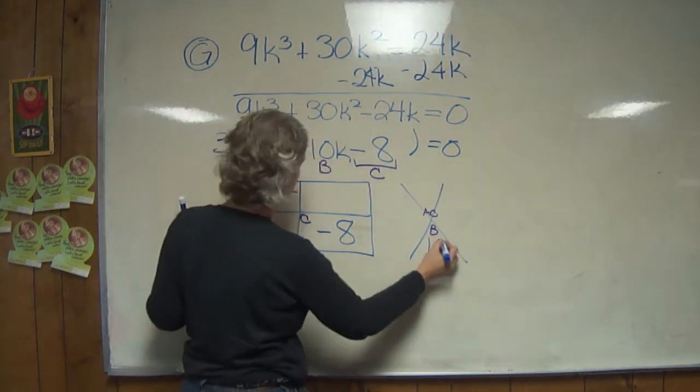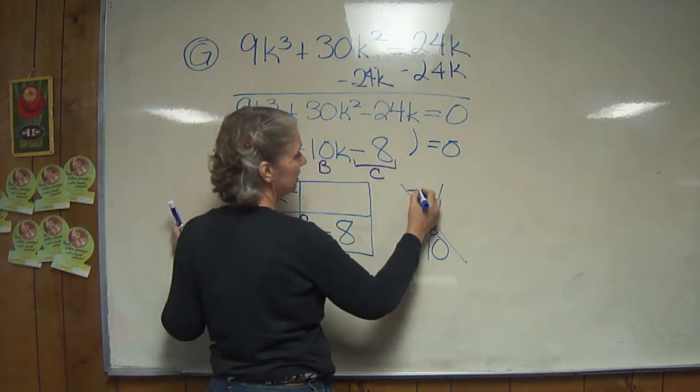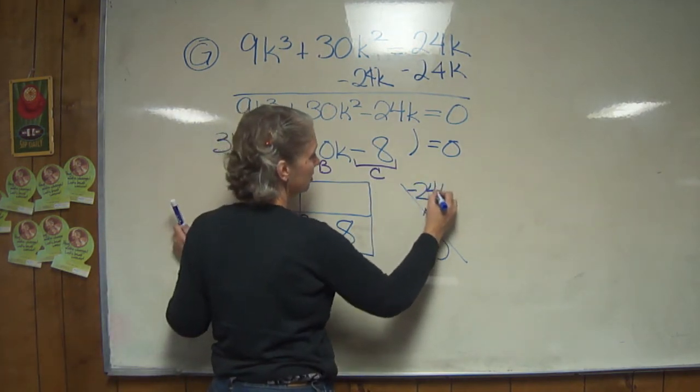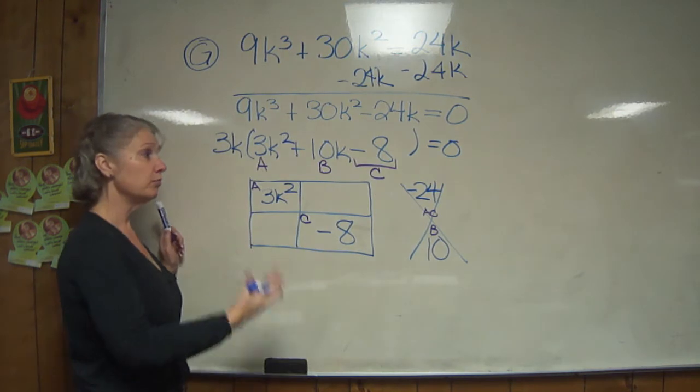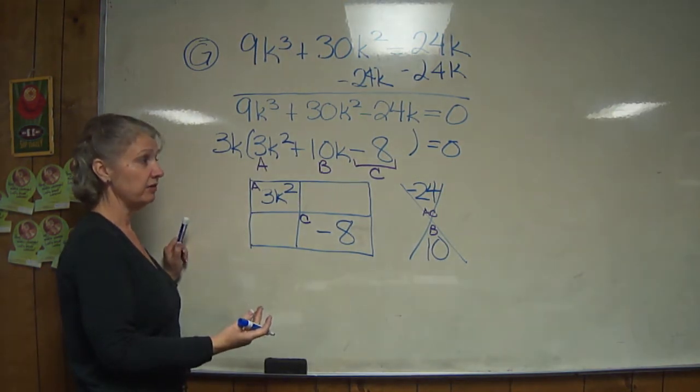So 3k - this is supposed to be squared - squared goes here. Negative 8 goes here. b is 10, and 3 times negative 8, or negative 24, goes here. So what multiplies to be negative 24 and adds to be positive 10?